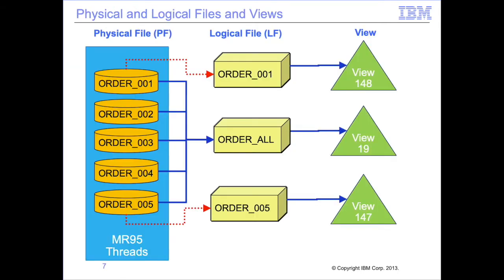A physical file definition describes a data source like the order files. A logical file definition describes a collection of one or more physical files. Views specify which logical files to read. The degree of potential parallelism is determined by the number of physical files. GVBMR95 generates subtasks to read each physical file included in every logical file read by any view included in the VDP.